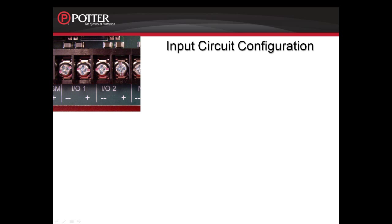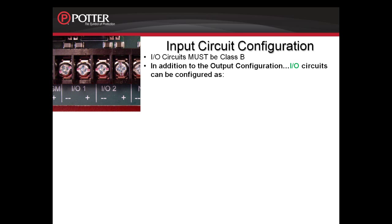When working with the I/O circuits on the fire alarm control panel, they must be wired Class B. When configuring the circuit as an input, we are monitoring a dry contact input. Through the software, you decide what that contact input is monitoring. Your options are as follows.